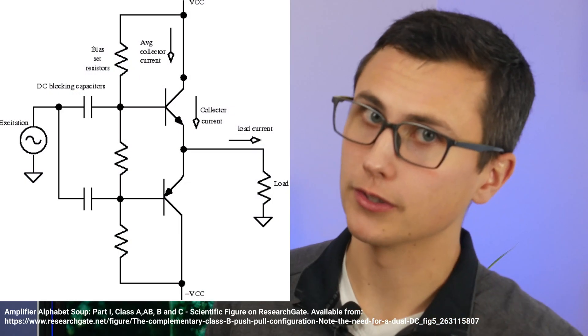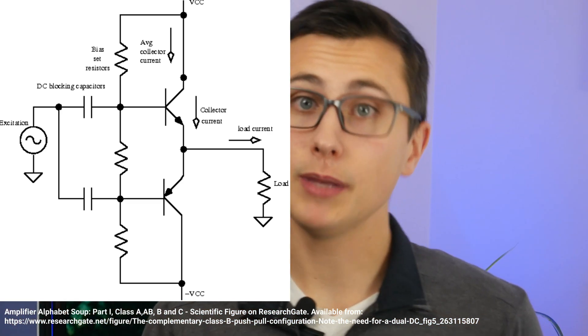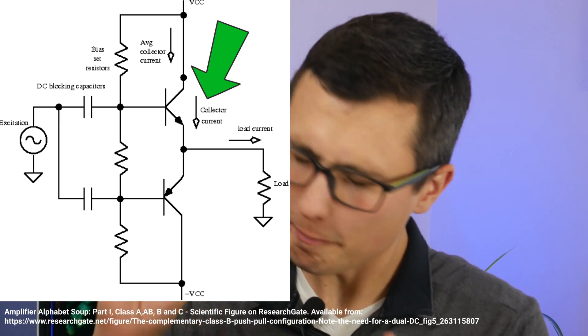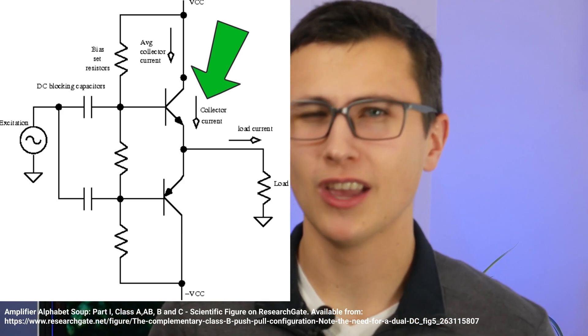If you haven't fallen asleep yet, you might see where this is going. If we smash a Class A amp and a Class B amp together, we get Class AB. A Class AB amplifier looks a lot like that complementary Class B on the surface, but they're different because they're biased differently. Class AB amplifiers are biased such that there's a small quiescent collector current — ideally just barely enough current to avoid those non-linearities near zero volts.